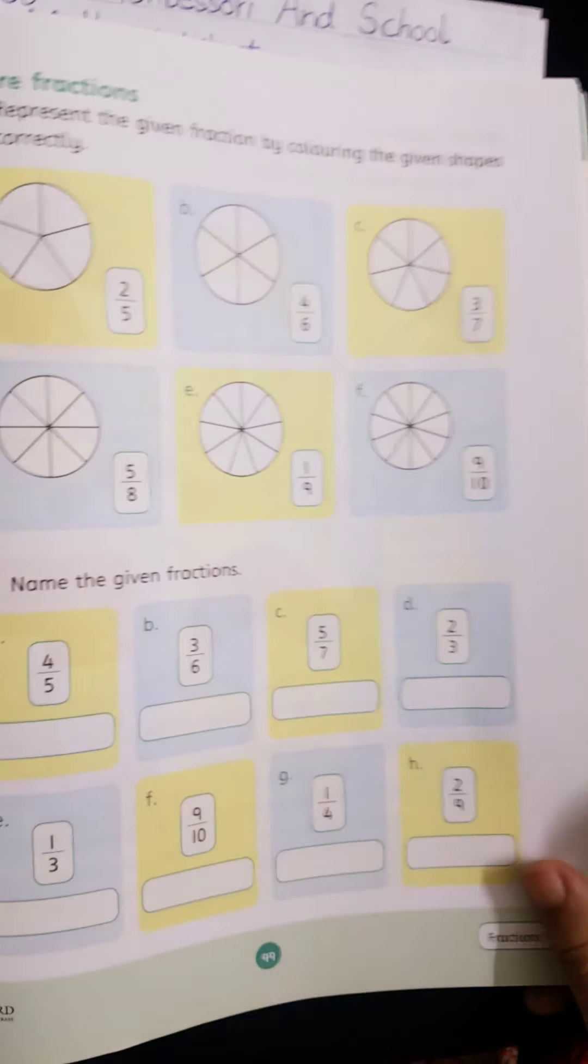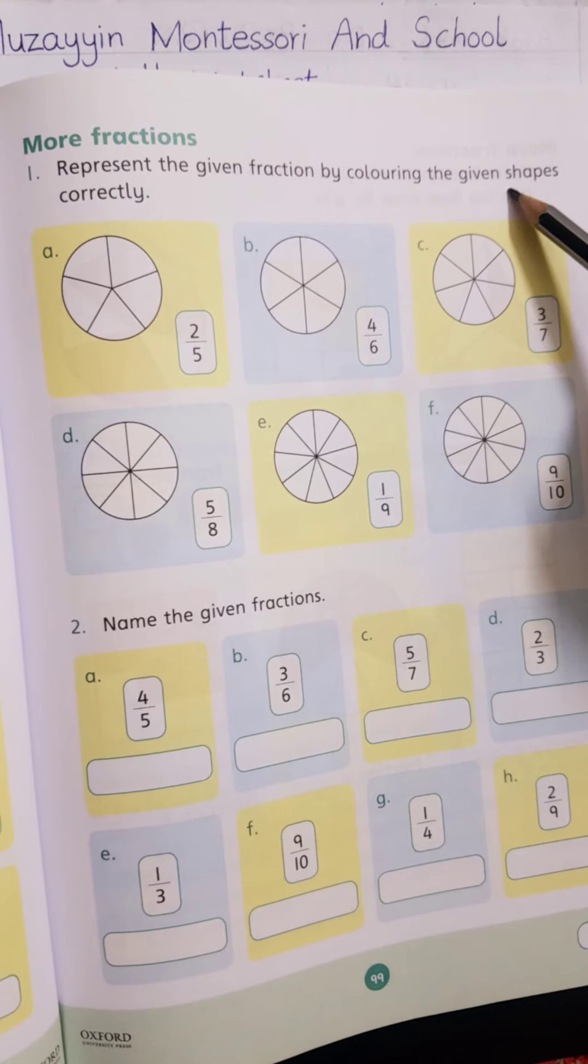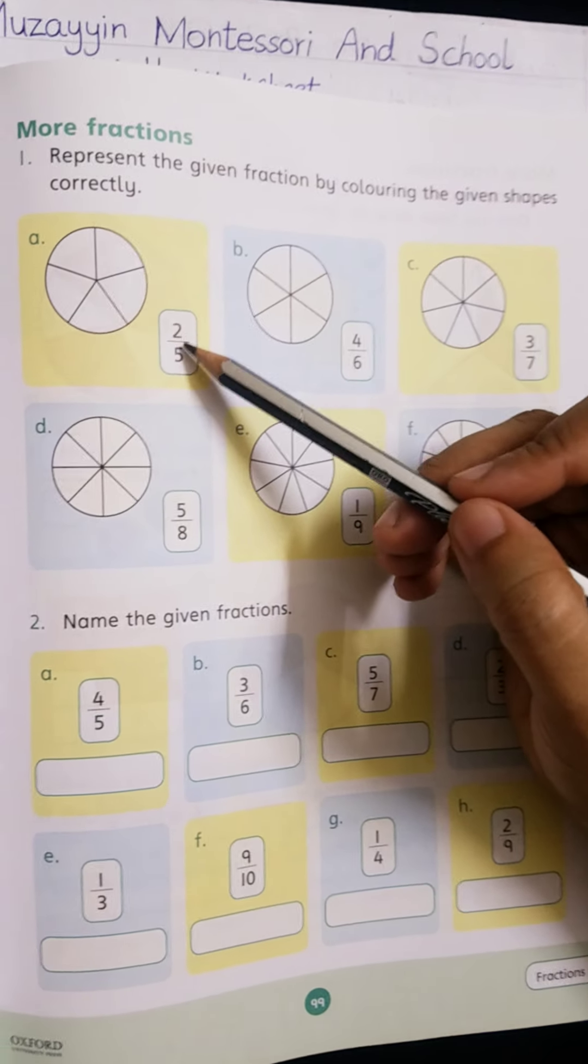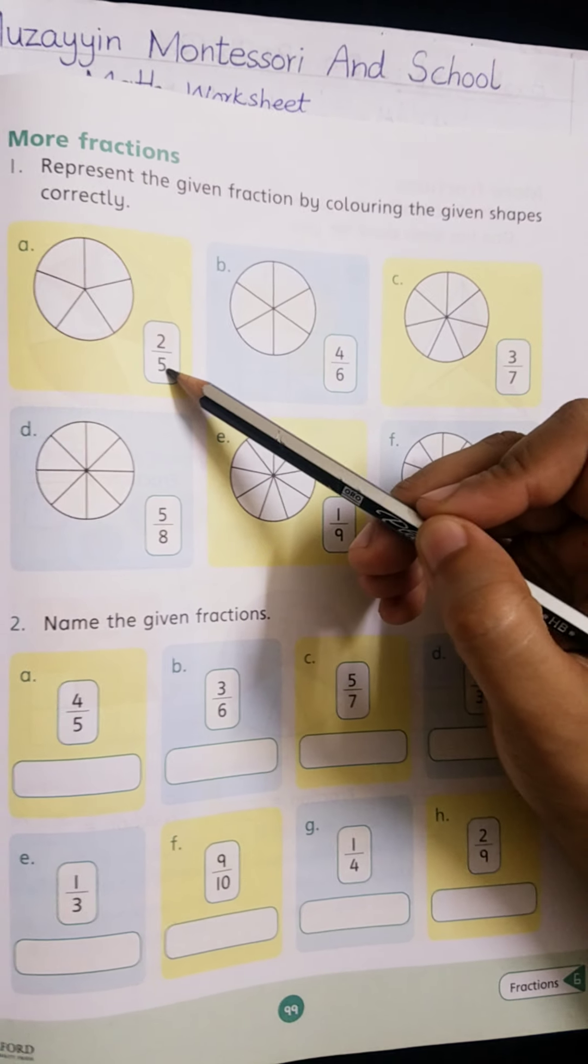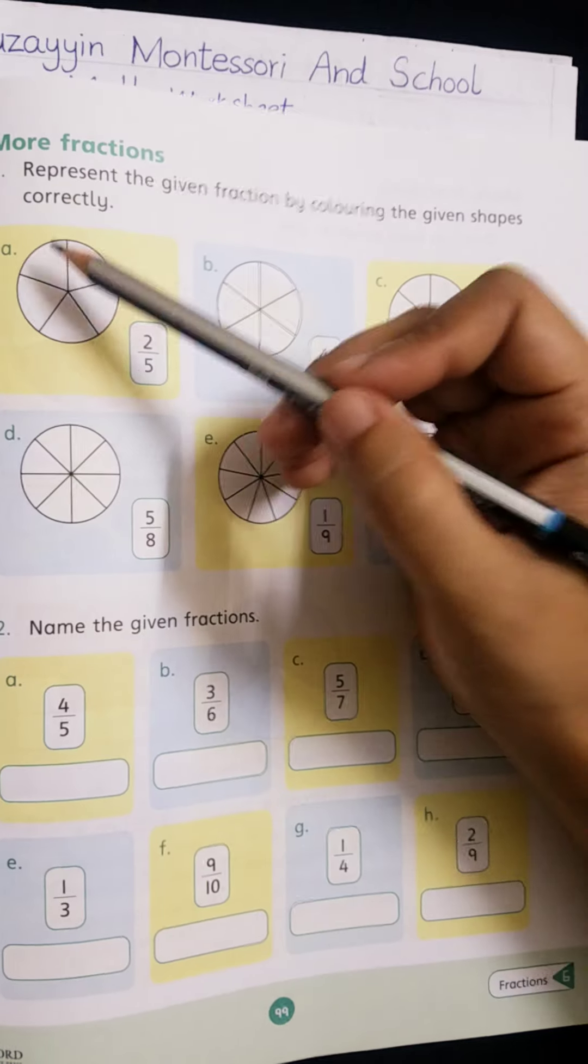Page number 99, more fractions. Represent the given fraction by coloring the given shapes correctly. Color 2 by 5. Total number of parts are 5, and 2 are colored. Color 2 parts.